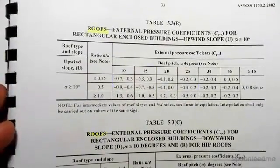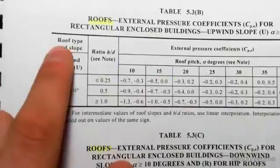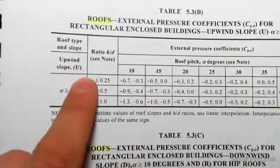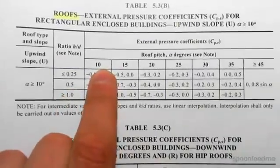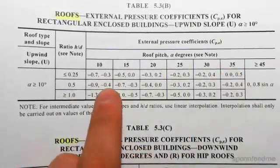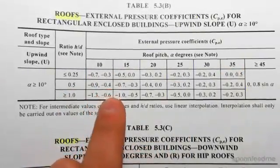Let's look at what we need to work out CPE. We have upward slope alpha greater than 10 degrees, so that's good. We need to work out this ratio h on d, and then we need to know our roof pitch, and you can see we're going to get different values of CPE.